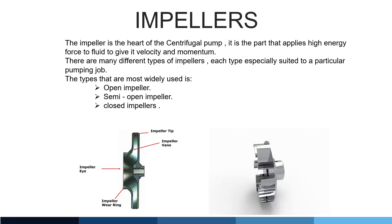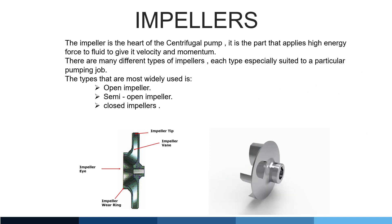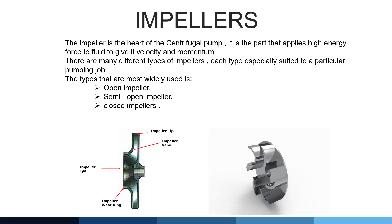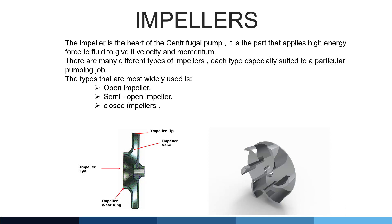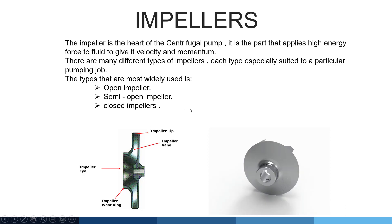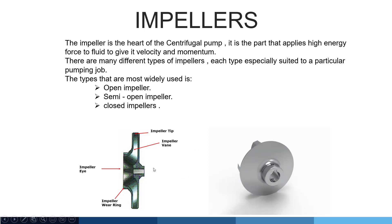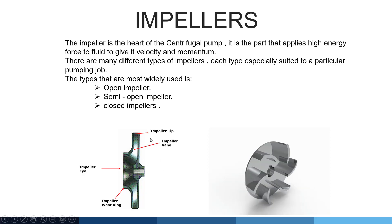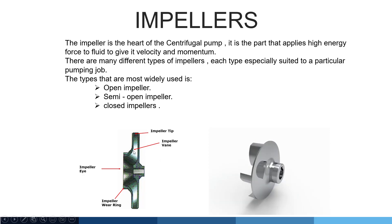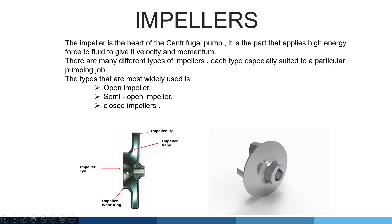The impeller is the heart of the centrifugal pump. It is the part that applies high energy force to fluid to give it velocity and momentum. There are many different types of impeller, each especially suited to a particular pumping job. The types most widely used are the open impeller, semi-open impeller, and closed impeller. You can see the parts of the impeller in this picture: at the top is the impeller tip, this is the impeller vane, the center portion is called the impeller eye, and there are impeller wear rings.